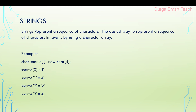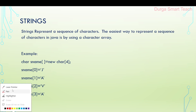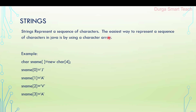For example, 'Java' — J is one character, A is one character, V is one character, A is one character. If we combine all the characters, that is nothing but a string. So the easiest way to represent a sequence of characters is by using a character array. An array is nothing but a collection of similar elements.